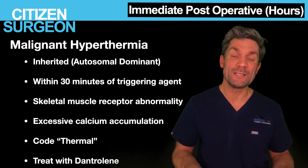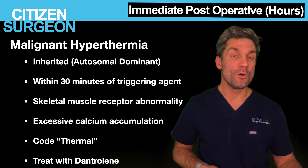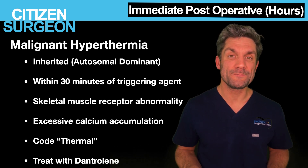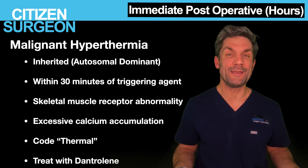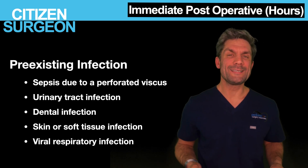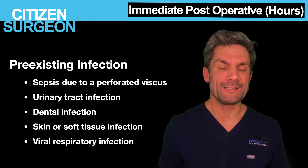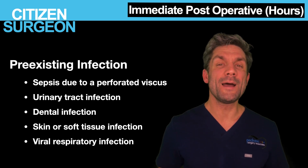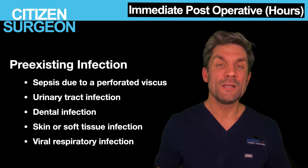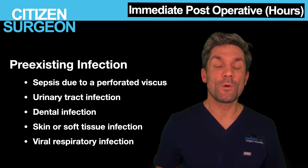If you have a patient with a family history of malignant hyperthermia, it's important that you use a protocolized approach and avoid triggering agents. The next immediate post-operative fever cause you can get by doing a good history is a pre-existing infection — that could be sepsis from a perforated viscus, an upper respiratory tract infection, a dental infection, a urinary tract infection, or a skin and soft tissue infection. Patients with these pre-existing infections have a much higher risk of surgical site infection post-operatively, so you need to acknowledge the risk or cancel the operation.